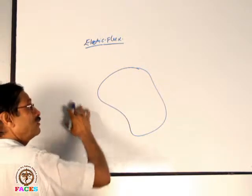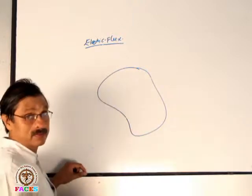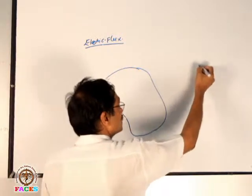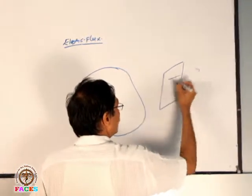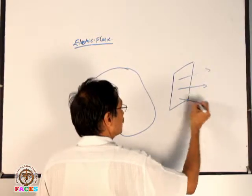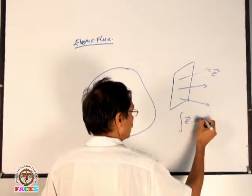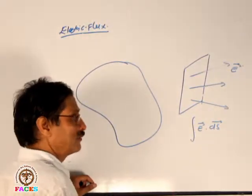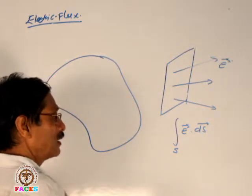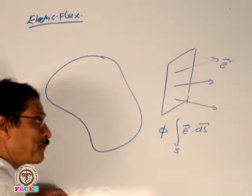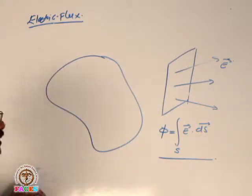Gauss's theorem is about the calculation of electric flux across a closed surface. If we cross a point on the electric field, we simply calculate E·ds. We take elementary fluxes over the entire surface and calculate the total flux.